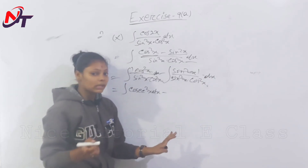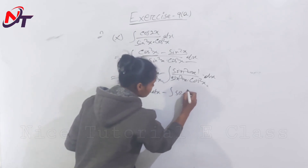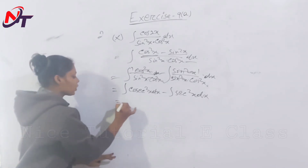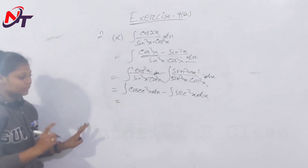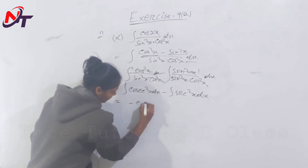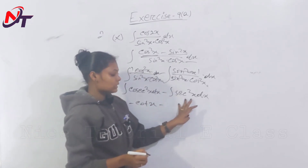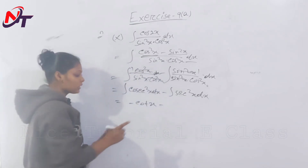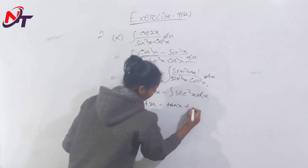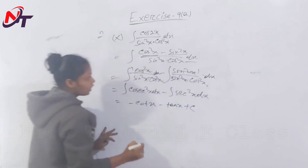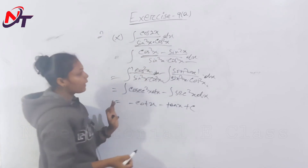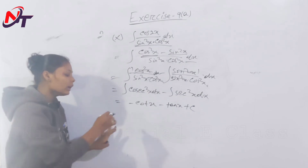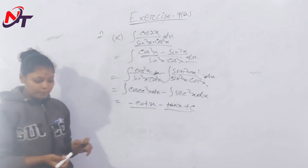Integration of sec square x is tan x, and integration of cosec square x is minus cot x. So the final answer is minus cot x minus tan x plus c.